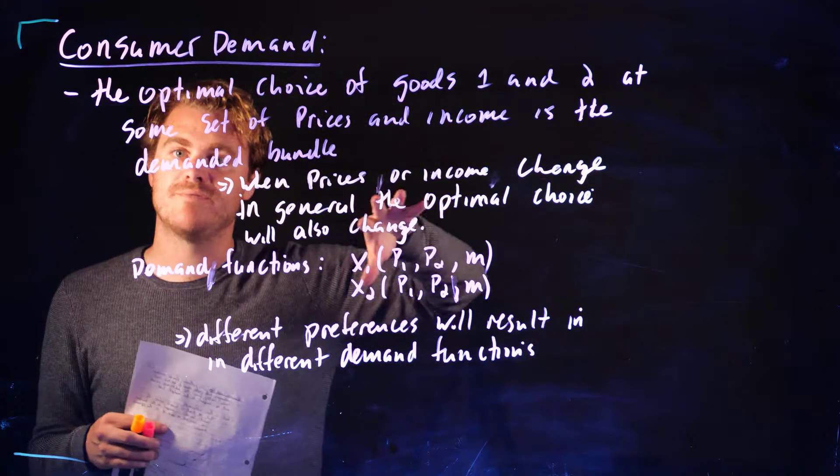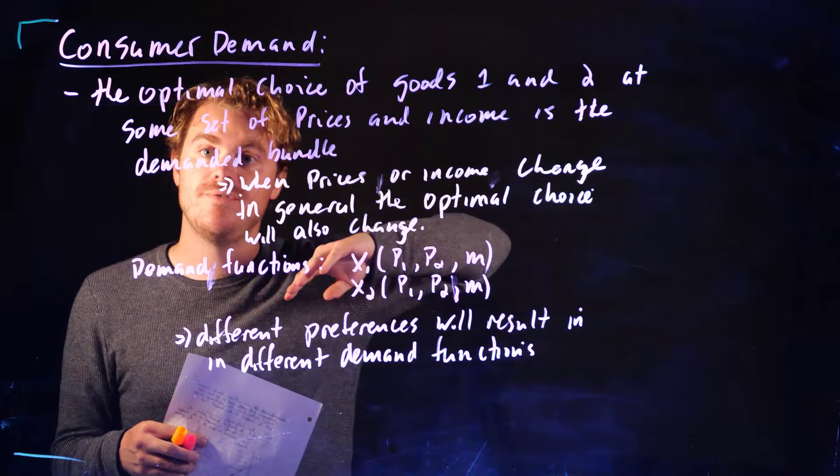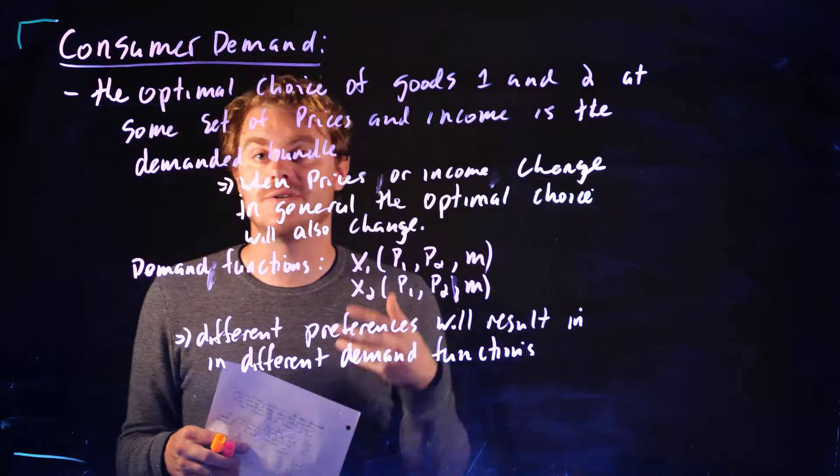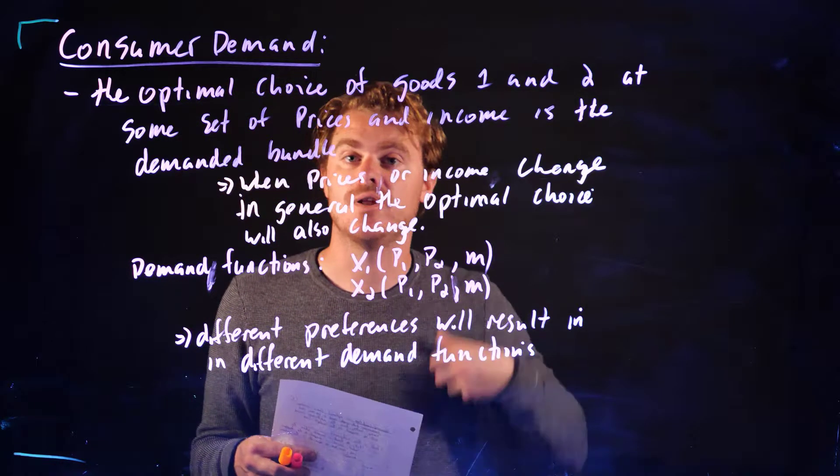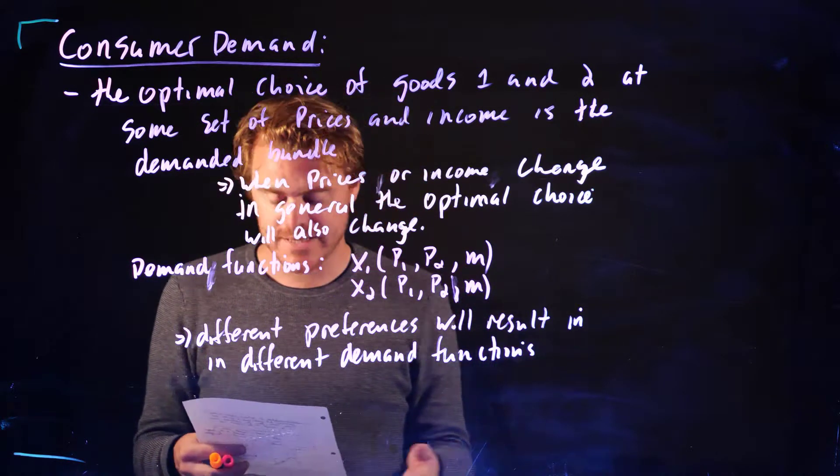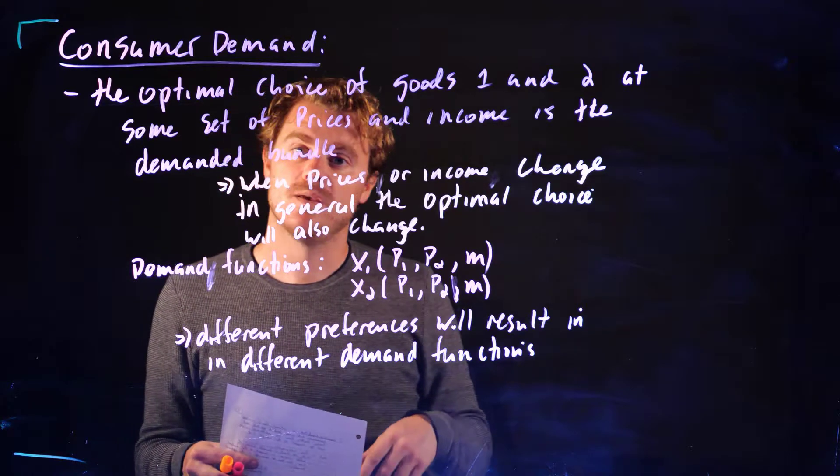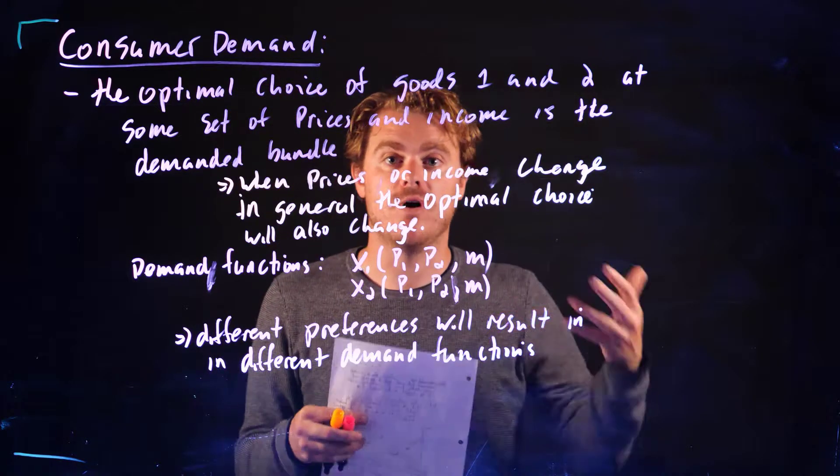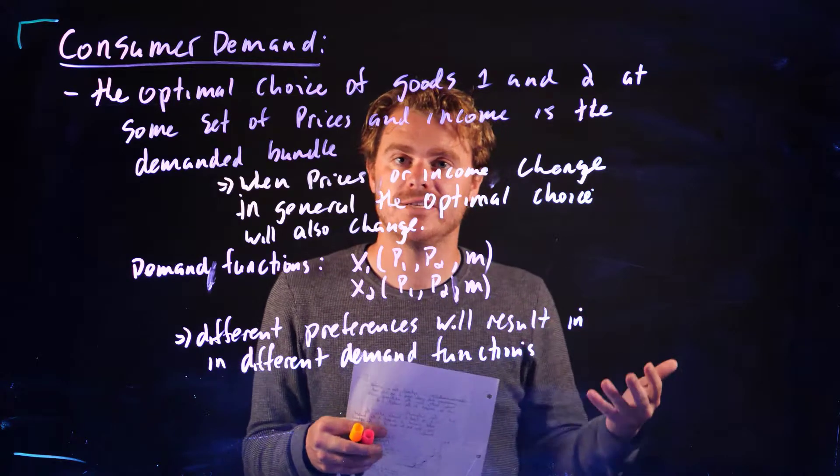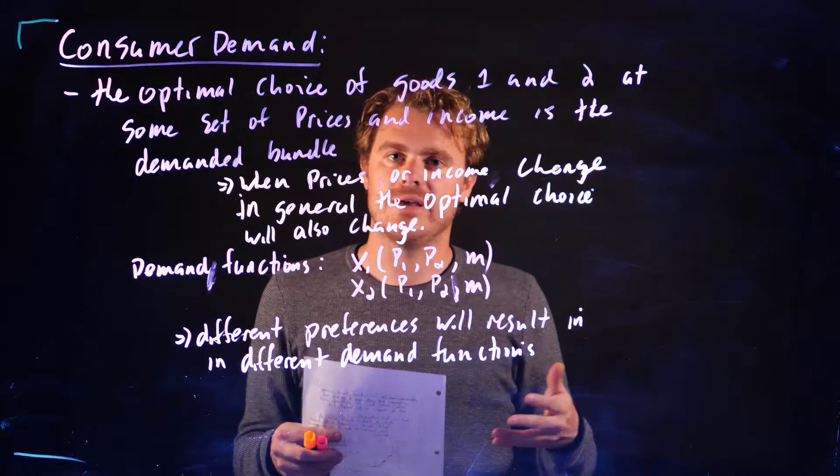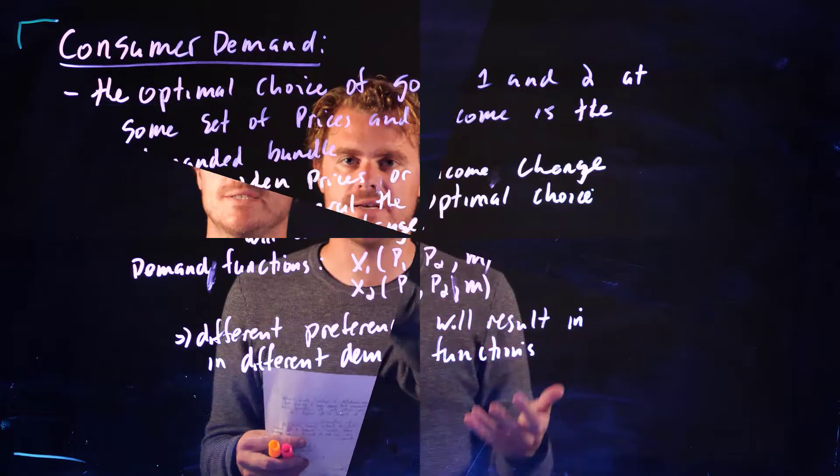So we're going to explore some different preferences that we saw in previous chapters, and think about what their demand functions look like. So perfect substitutes and perfect complements.